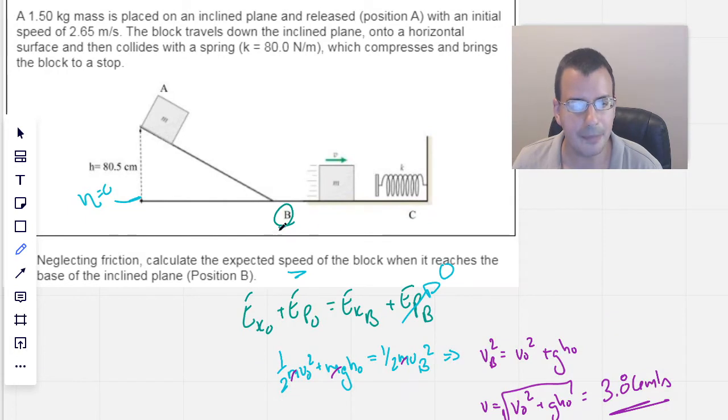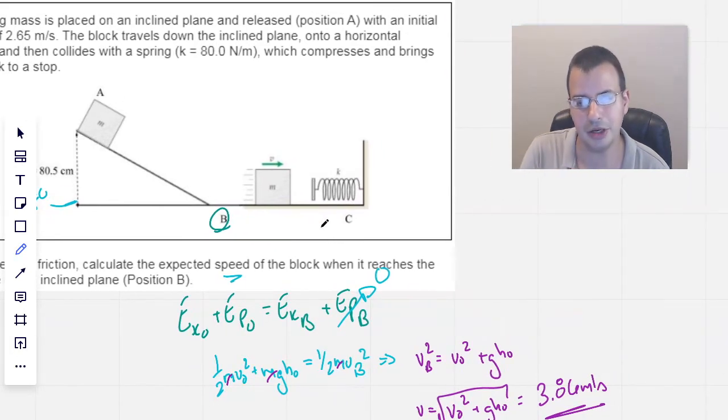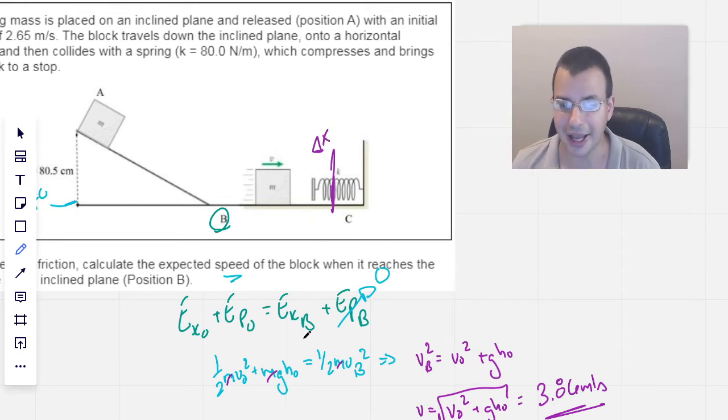Now, there's no part two mentioned here, but I'm going to assume that the part two is how much does the spring compress? So you're going to have this come down, and all this energy is then going to be put into the spring, causing it to compress a certain amount, delta x.